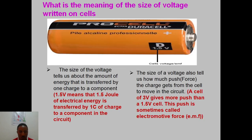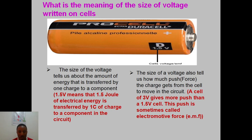Different batteries of course have different voltages — we have 1.5 volts, 3 volts, 12 volts, and so on. What's the meaning of the voltage size written on the cell? It tells us two things. Number one, the voltage written on the battery tells us the amount of energy that is transferred by one charge to a component. It means that 1.5 volts implies that 1.5 joules of energy is transferred by one charge to a component in the circuit.